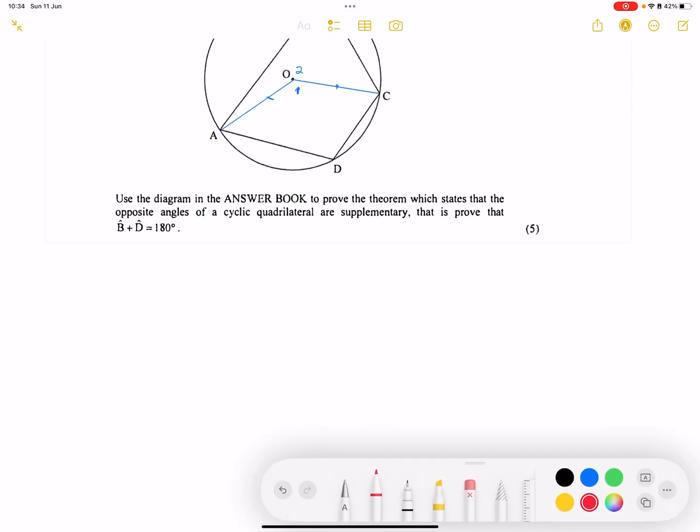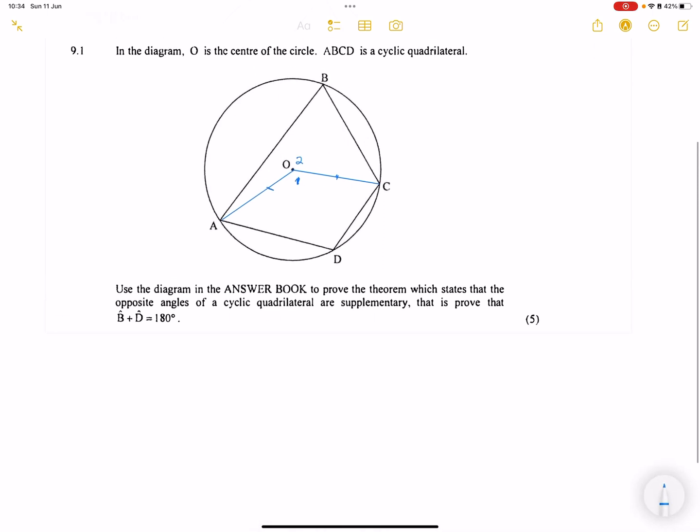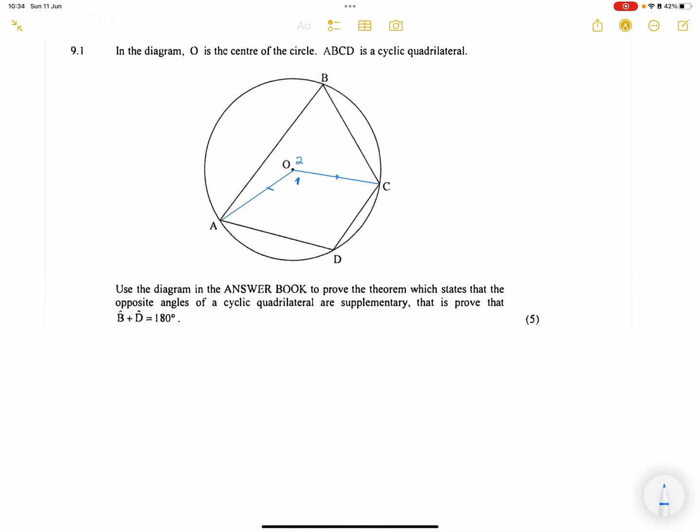So in proving this, we're simply going to state that, in this case, we know that the angle O1... In fact, we should have started with the construction. So we construct line OA and OC, which are radii. So in this case, we simply are going to say angle O1 will be equal to two times angle B.